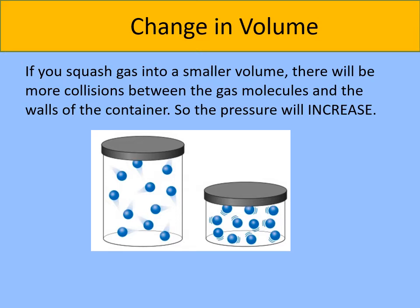Here we have two containers. They've got the same amount of gas particles — if you count them you'll see there are 11 in both cylinders. In reality there'll be billions of particles, but let's imagine we've got the same amount. The one on the right has a smaller volume compared to the one on the left. Since the space in the smaller one on the right is less, there are more collisions on the wall from those gas particles — they're colliding with the wall more often.